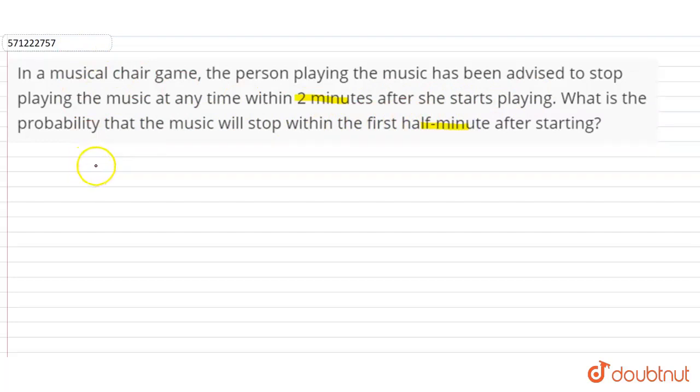You can do this question by two methods. Either you can take the time after half of minutes like 0 minutes, then half minute, then 1 minute, then 1.5 minute and 2 minutes. These are the equal intervals, and this is divided into 1, 2, 3 and 4 equal intervals of half minutes. According to this, probability of occurring an event will be equal to number of favorable outcome divided by total outcome.